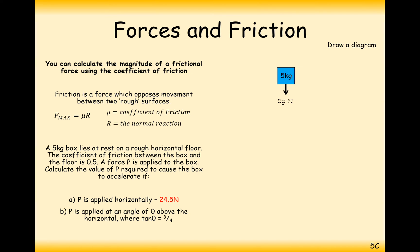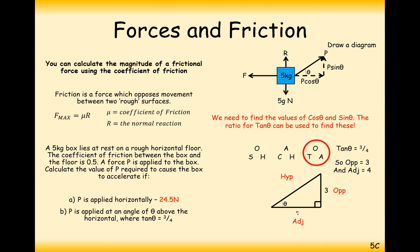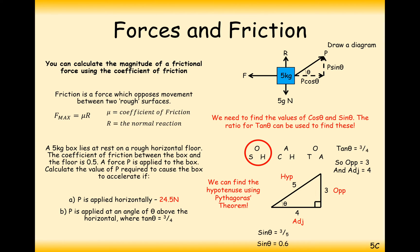Now with P applied at an angle, you might think we just take the horizontal component and set it equal to friction — but it's not that straightforward. P also has a vertical component that affects R. Resolving: the horizontal component is P cos θ and the vertical component is P sin θ. Using a right-angled triangle with tan θ = 3/4, sin θ = 3/5 and cos θ = 4/5, so the components are 0.8P horizontally and 0.6P upwards.